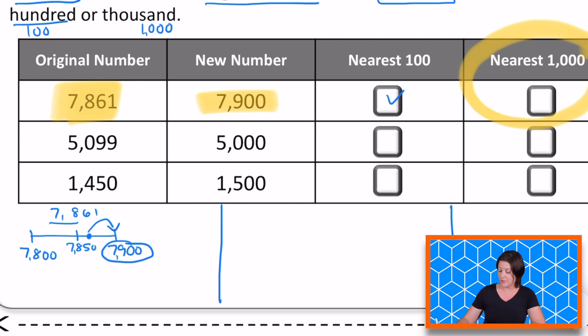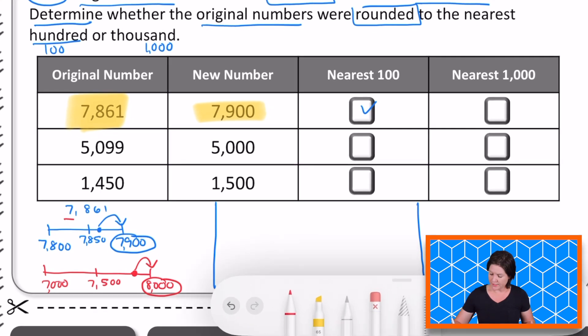But I'm going to check it out and just make sure that rounding to the nearest thousand doesn't work. So this time rounding to the nearest thousand, we have 7,000. So if we round it, it would be between 7,000 and 8,000. And in the middle, the halfway point would be 7,500. Well, 7,861 is right here, causing us to round up because it's past that halfway mark to 8,000. That is not the new number. So it's not rounding to the nearest thousand. Let's move on to the next one.